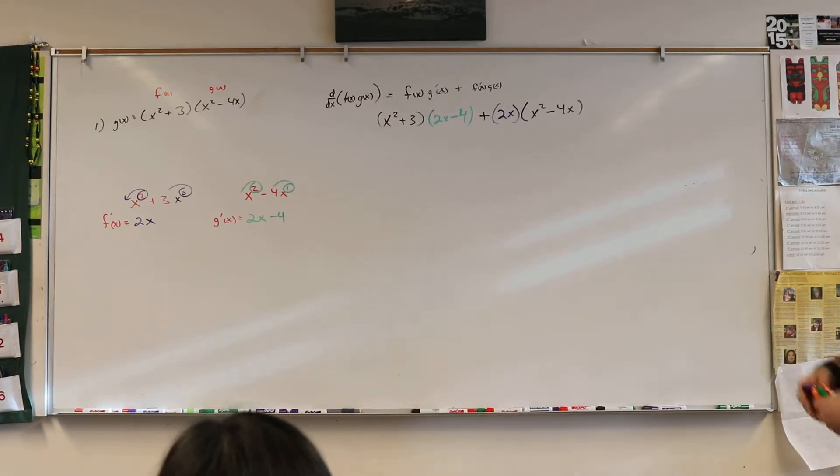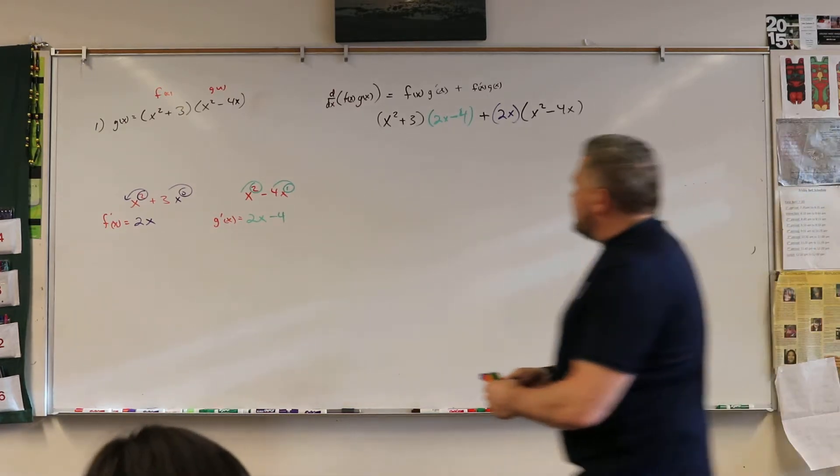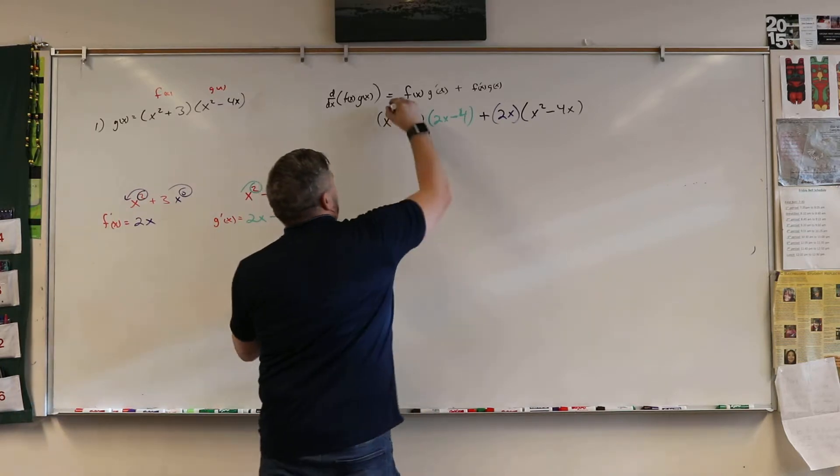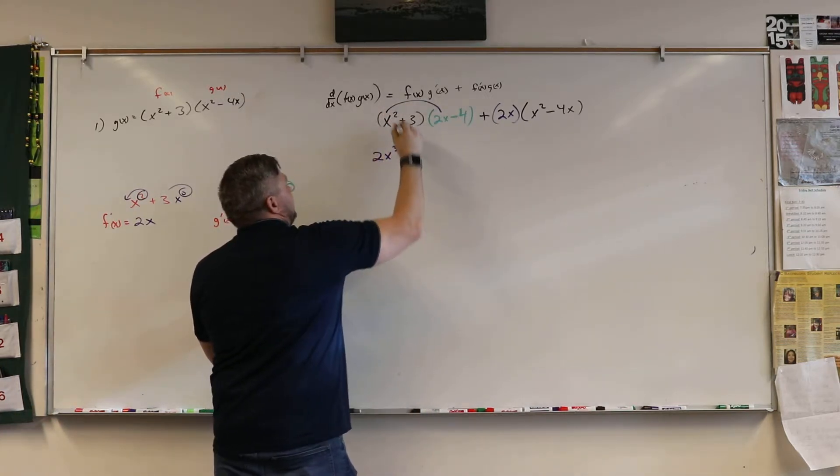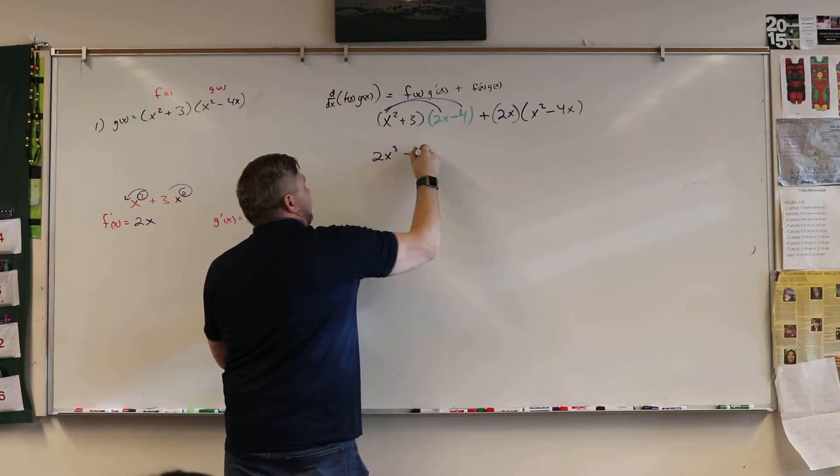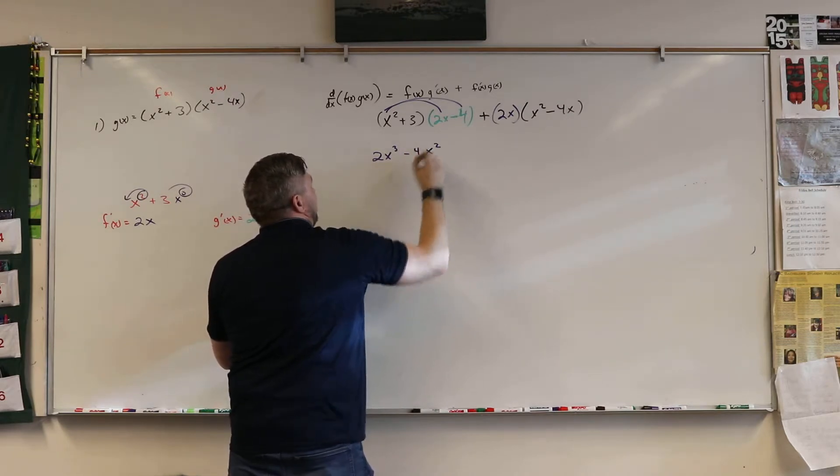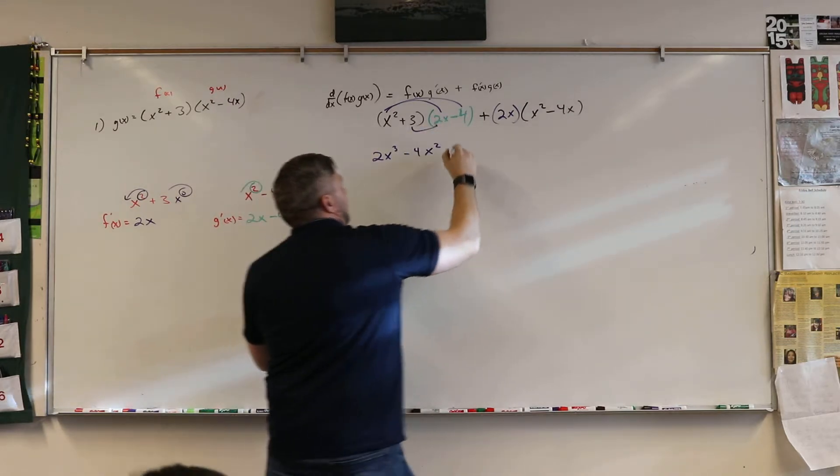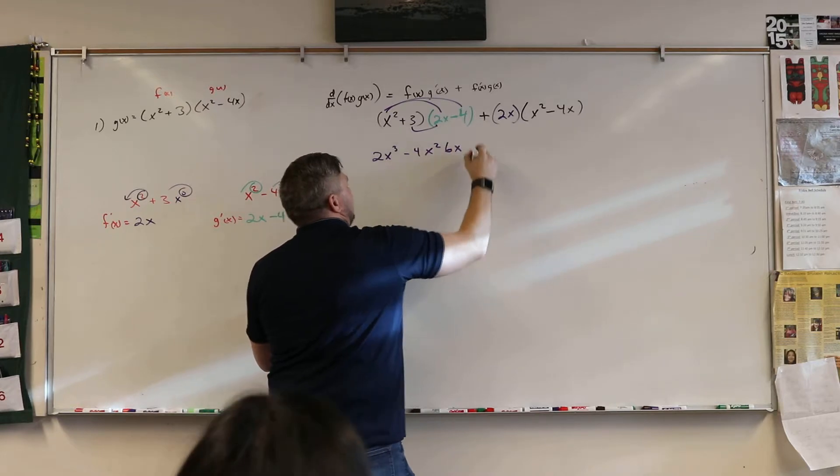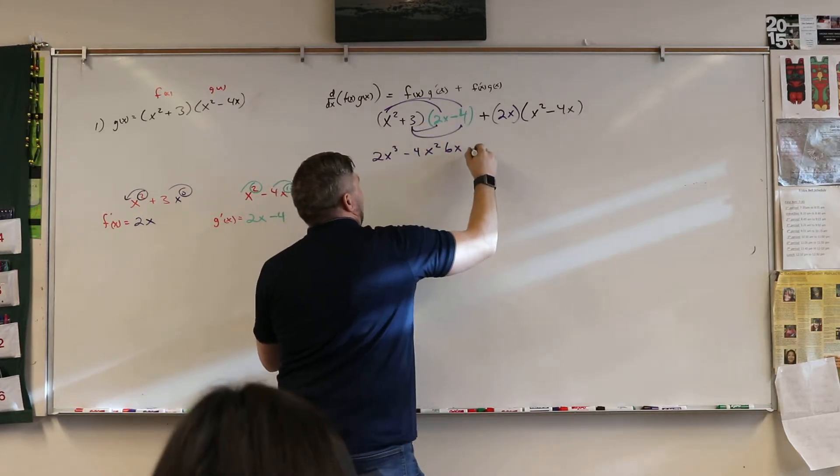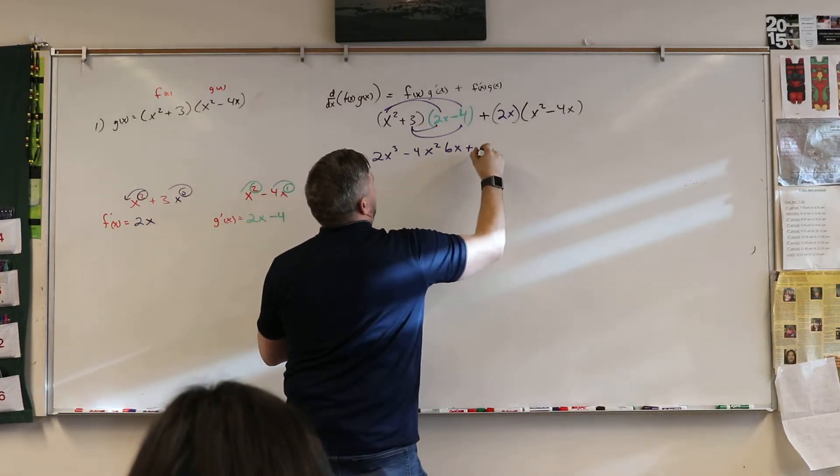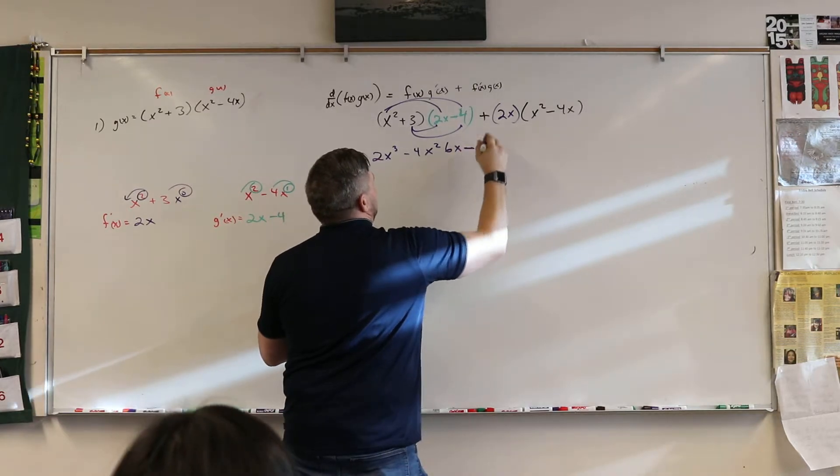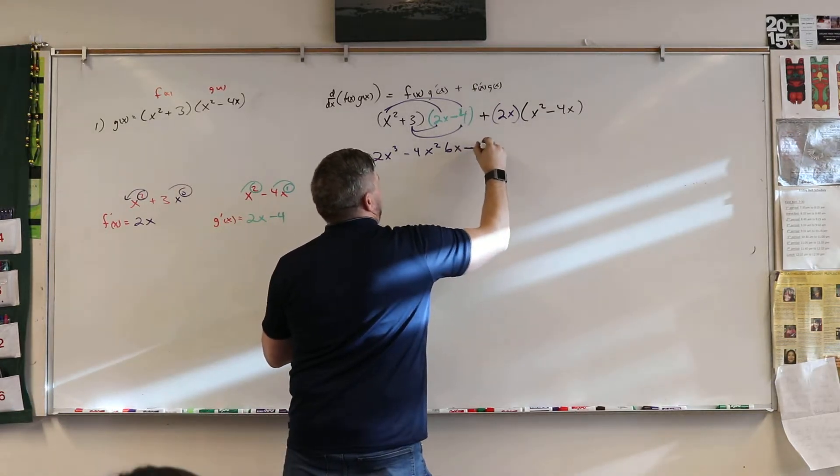All right. So let's multiply these. Everybody on the block gets the paper. So we got 2x cubed. We got minus 4x squared. We got 6x. And we got plus, no, minus 12.